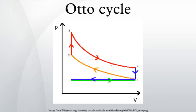Process 2 to 3, Ignition Phase: The piston is momentarily at rest at TDC. During this instant, known as the ignition phase, the air-fuel mixture remains in a small volume at the top of the compression stroke. Heat is added to the working fluid by the combustion of the injected fuel, with the volume essentially being held constant. The pressure rises and the ratio is called the explosion ratio.